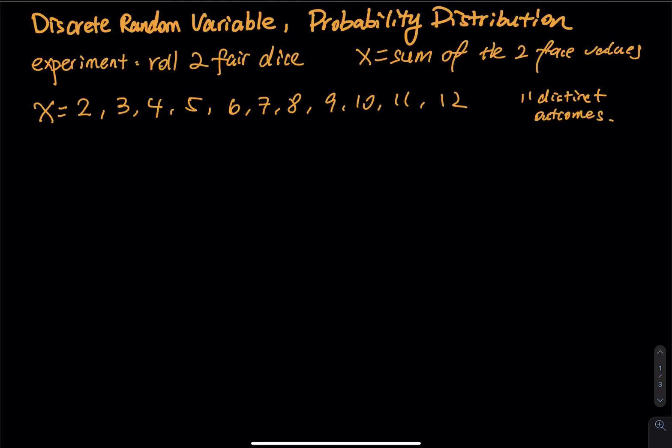Since this is called a random variable, every single distinct outcome has its own probability. So that's what we are trying to do right now. Let's organize everything into a table.